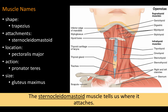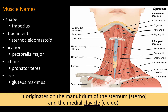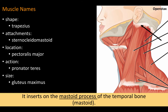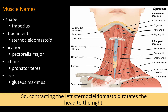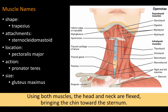The sternocleidomastoid muscle tells us where it attaches. It originates on the manubrium of the sternum and the medial clavicle. It inserts on the mastoid process of the temporal bone. Using one muscle, the mastoid process is pulled towards the sternum and the head rotates to the opposite side — so contracting the left sternocleidomastoid rotates the head to the right. Using both muscles, the head and neck are flexed, bringing the chin towards the sternum.